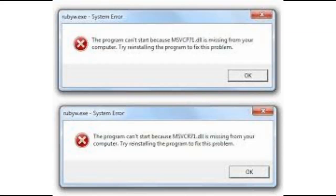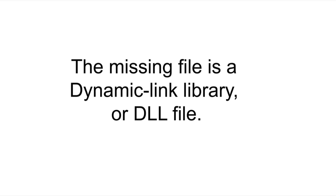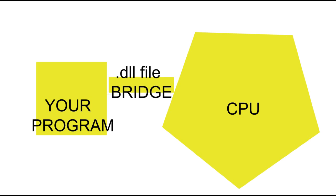It's just not rocket science. You can replace the missing file yourself with just a few basic computer skills. The missing file is a dynamic link library, or DLL file. The simplest way to explain the file: it's like a bridge between your program and the CPU of your computer. At the moment your bridge is out, so we're just going to put the bridge back.